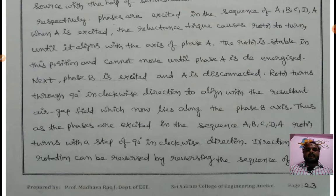When A is excited, the reluctance torque causes motor to turn until it aligns with the axis of phase A. The rotor is stable in this position and cannot move until phase A is de-energized. Next, phase B is excited and phase A is disconnected.